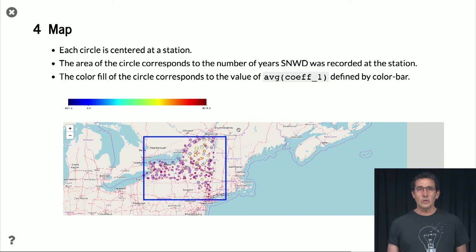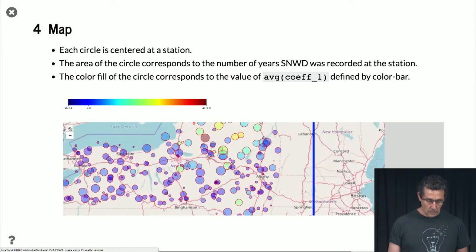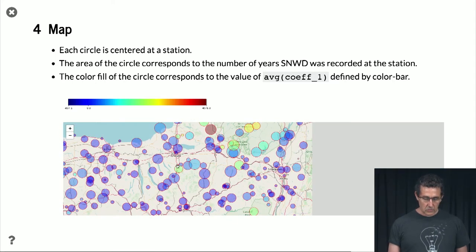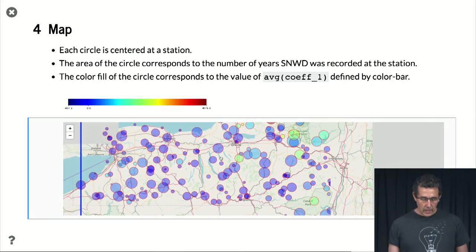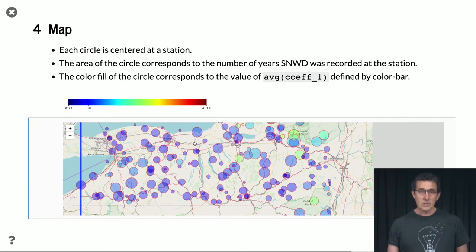And what we would like to do is put the information on top of it. So, we have each station represented by a circle. Let me zoom in. Each station is represented by a circle. The size of the circle or the area of the circle corresponds to the number of measurements we have from that station. There are some stations that have very few measurements and some stations that have a lot of measurements.